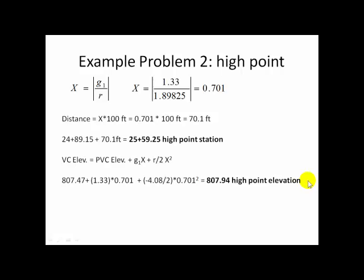So let's find out just where that high point really is. By using the same method we saw before, we plug in G1. Then we plug in R. We get the absolute value of that result. It comes out to 0.701. That in stations is 70.1 feet. And thus we can find the high point is at 25 plus 59.25 feet. And the high point elevation is 807.94.